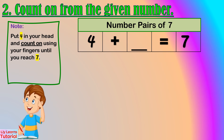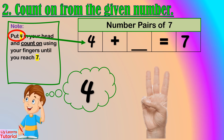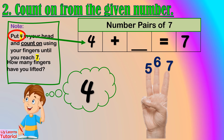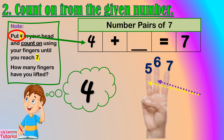Let's start from 4. Hold 4 in your head, then count up: 5, 6, 7. How many fingers have you lifted? 1, 2, 3 — 3 fingers. So, the number pair of 4 is 3.